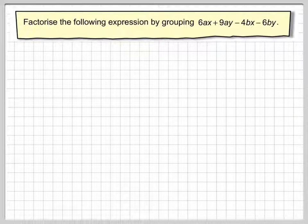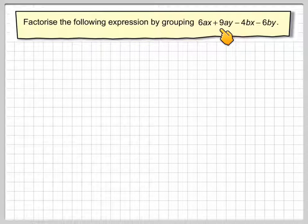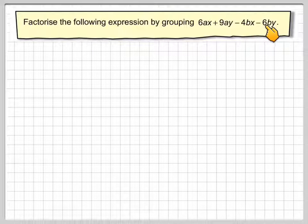Hello, another video from me. Factorize the following expression by grouping: 6ax plus 9ay minus 4bx minus 6by.